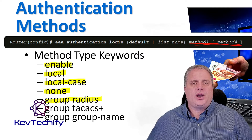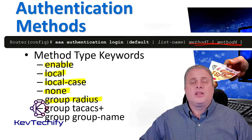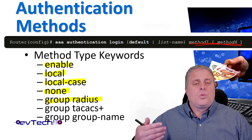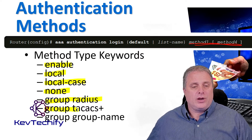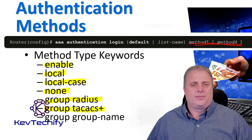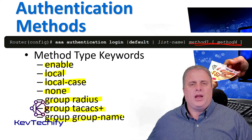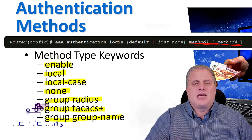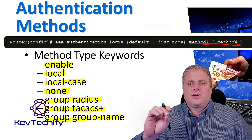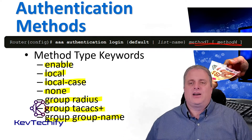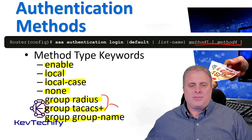The last three are groups. Group RADIUS is a list of all RADIUS servers for authentication — you create a list of all your RADIUS servers that you can use for authentication. Group TACACS is the same thing but for a TACACS server. The last one is the group name, which uses a subset of the RADIUS or TACACS servers for authentication, as defined in the group RADIUS and group TACACS commands.